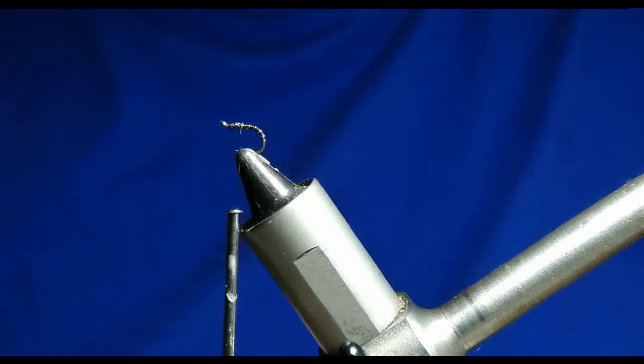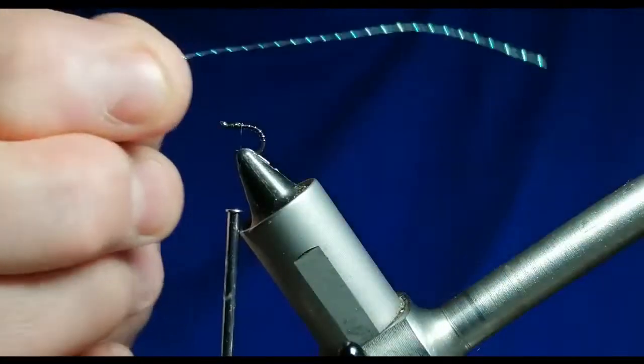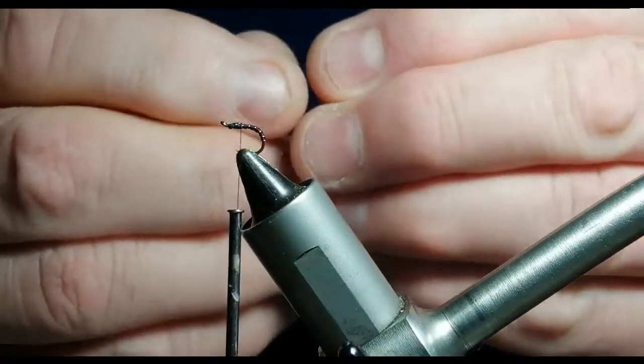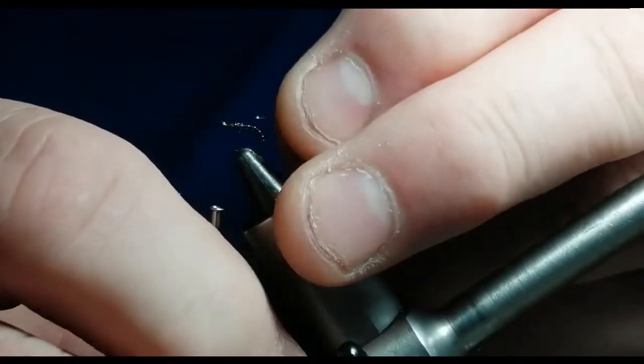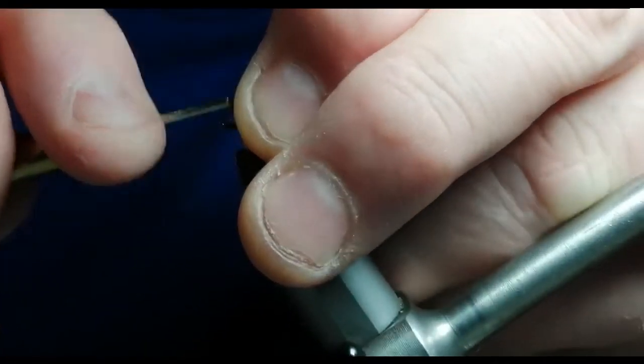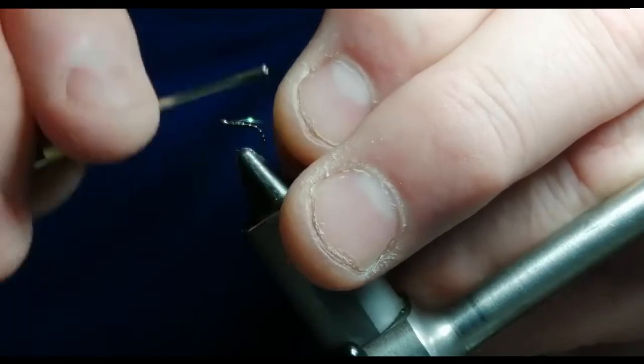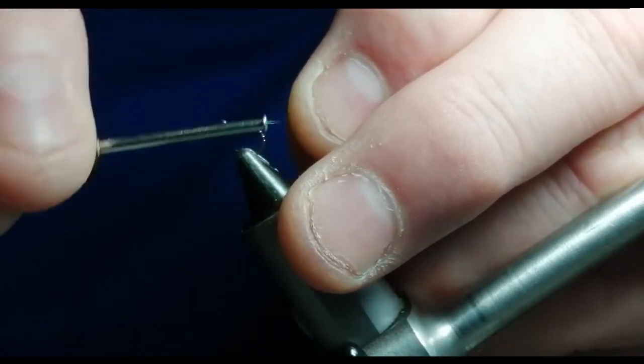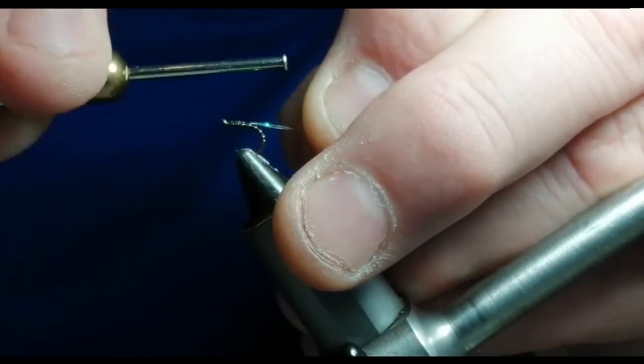Now what we're going to use is a little bit of crinkle flash. This is just going to go along the top. This is going to give a trigger point towards the back of the fly.